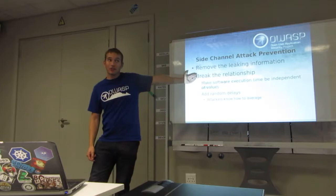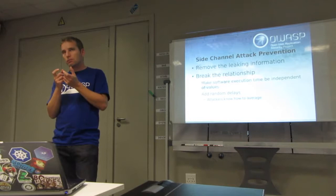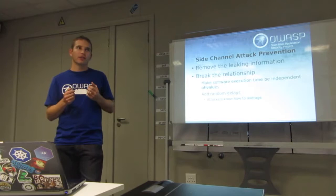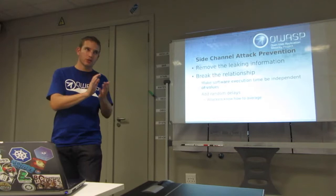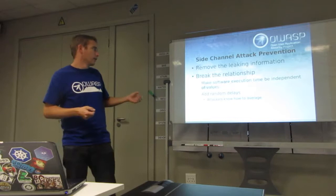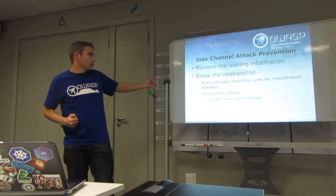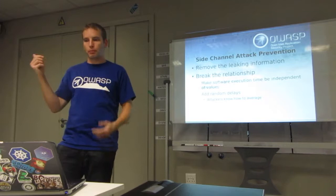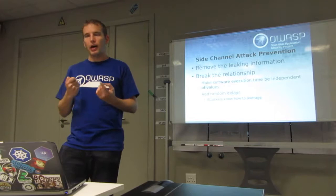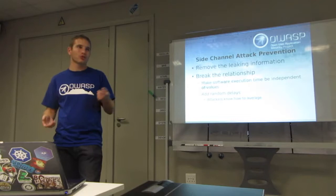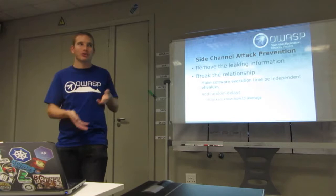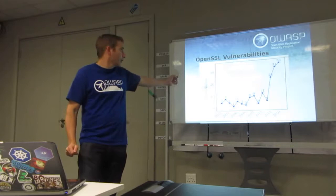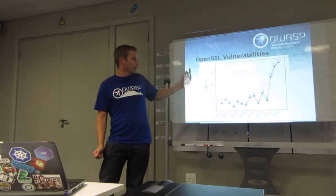Preventing side channels - remove the leaking information. Or breaking the relationship. It's sometimes a very fine distinction to make. If there was a relationship between I feed in bigger numbers and it takes longer, then you can kind of start to infer things. Making software execution time to be independent - that sounds like what PFsense is trying to do there. Adding random delays is another example. However, attackers do know how to average. So you're throwing in the random delays and they're going to do 10 runs then and see if they're on average closer or further apart. Your random numbers are going to get averaged out. It's either going to take longer or shorter. In case you thought it wasn't a problem.